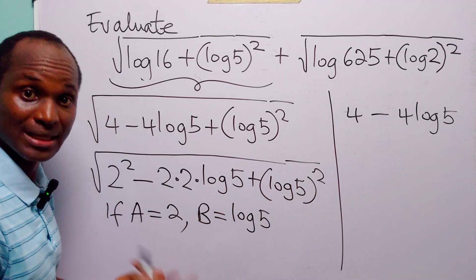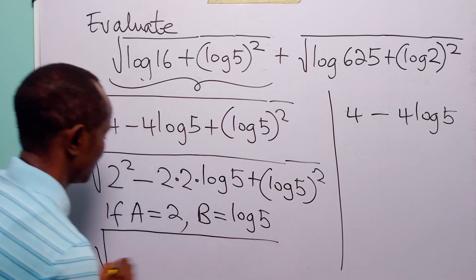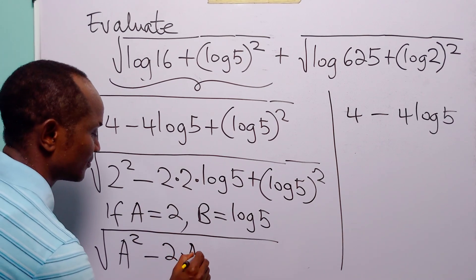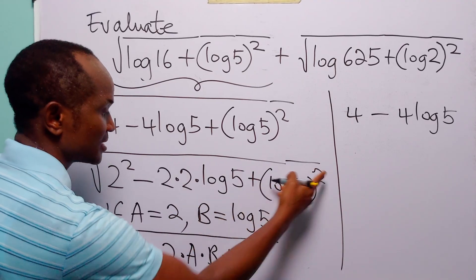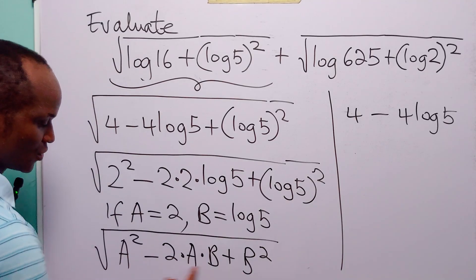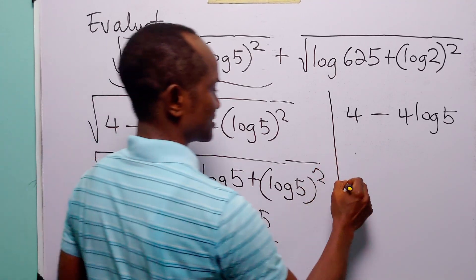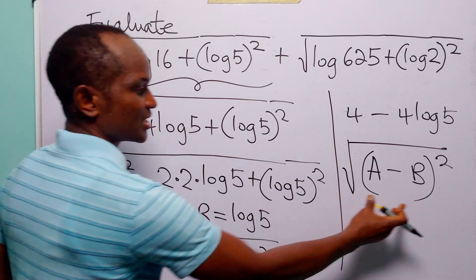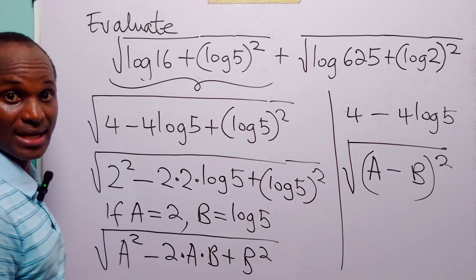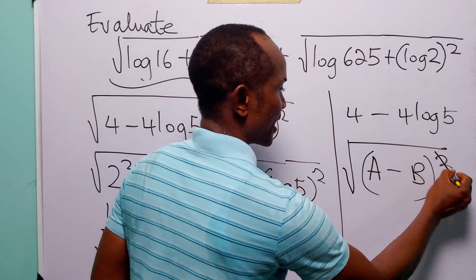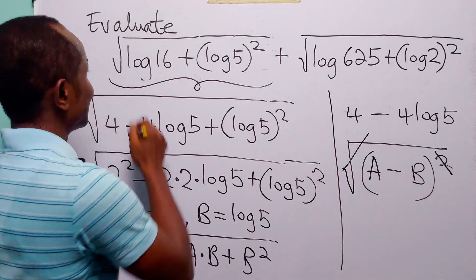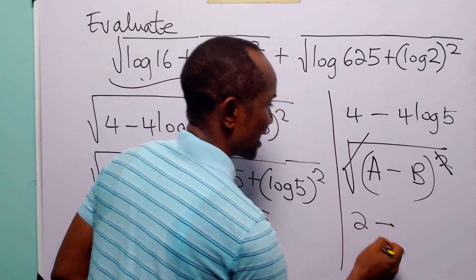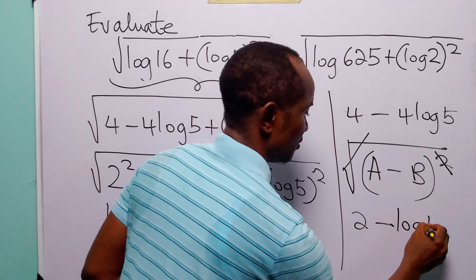If a equals 2 and b equals log 5, then the expression under the square root is a squared minus 2ab plus b squared. Look closely — this is the square root of (a minus b) squared, because expanding that bracket gives exactly this. The square and square root cancel, telling us this whole square root is equal to a minus b, which is 2 minus log 5.